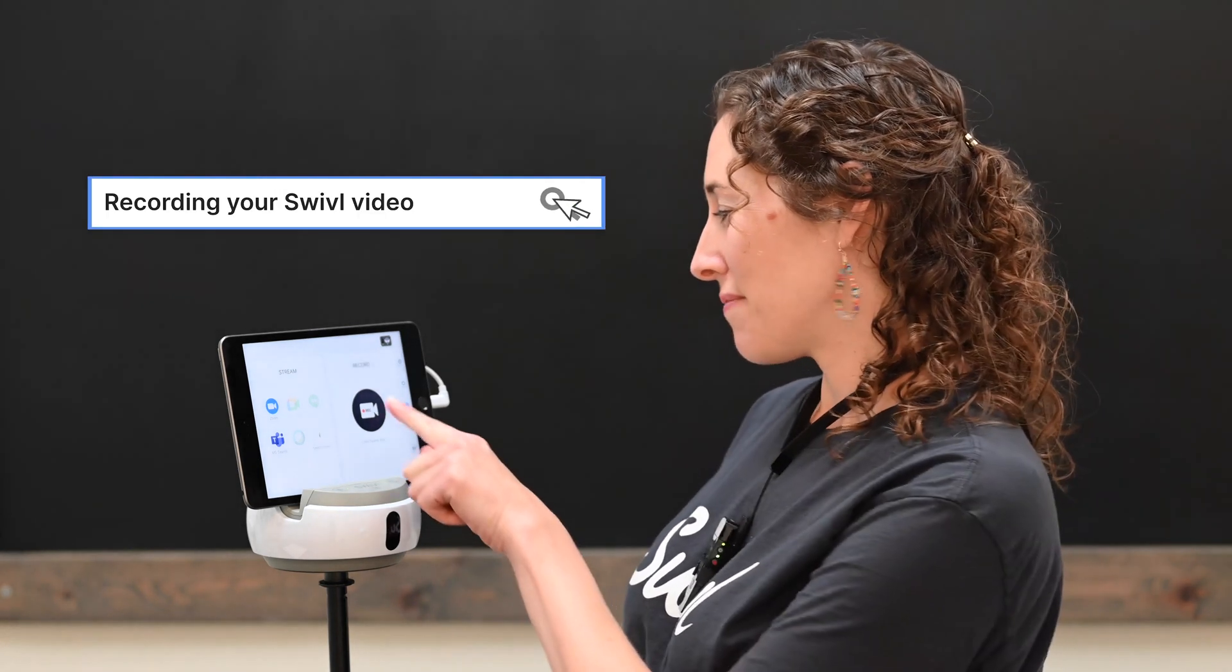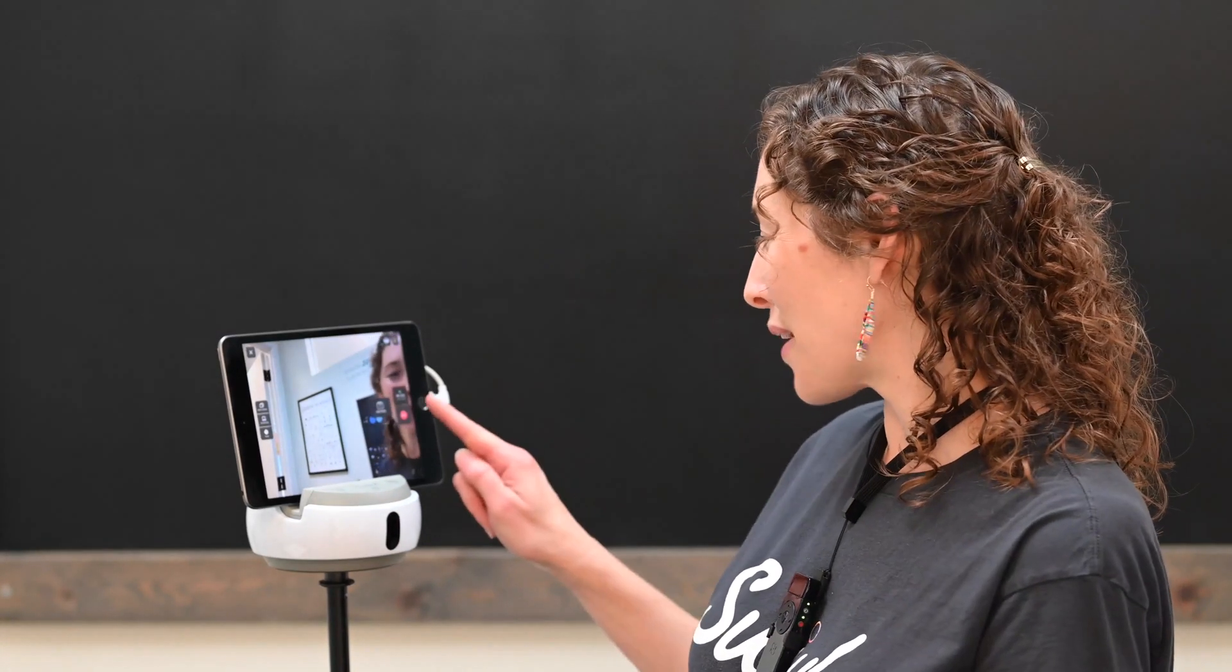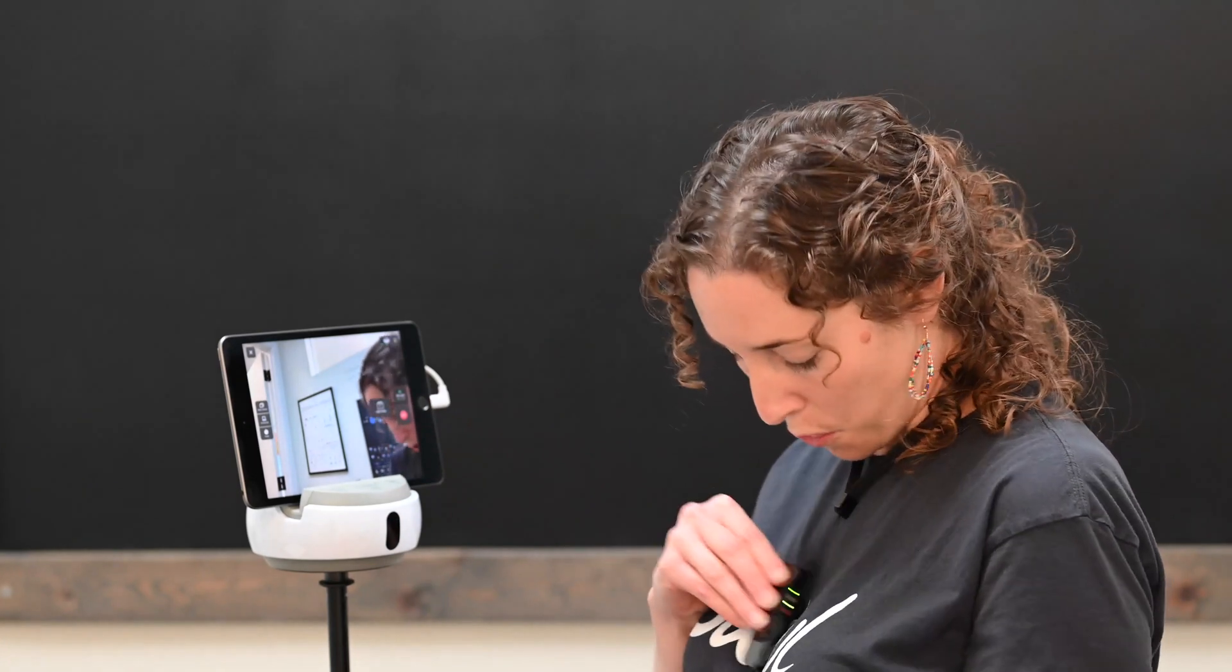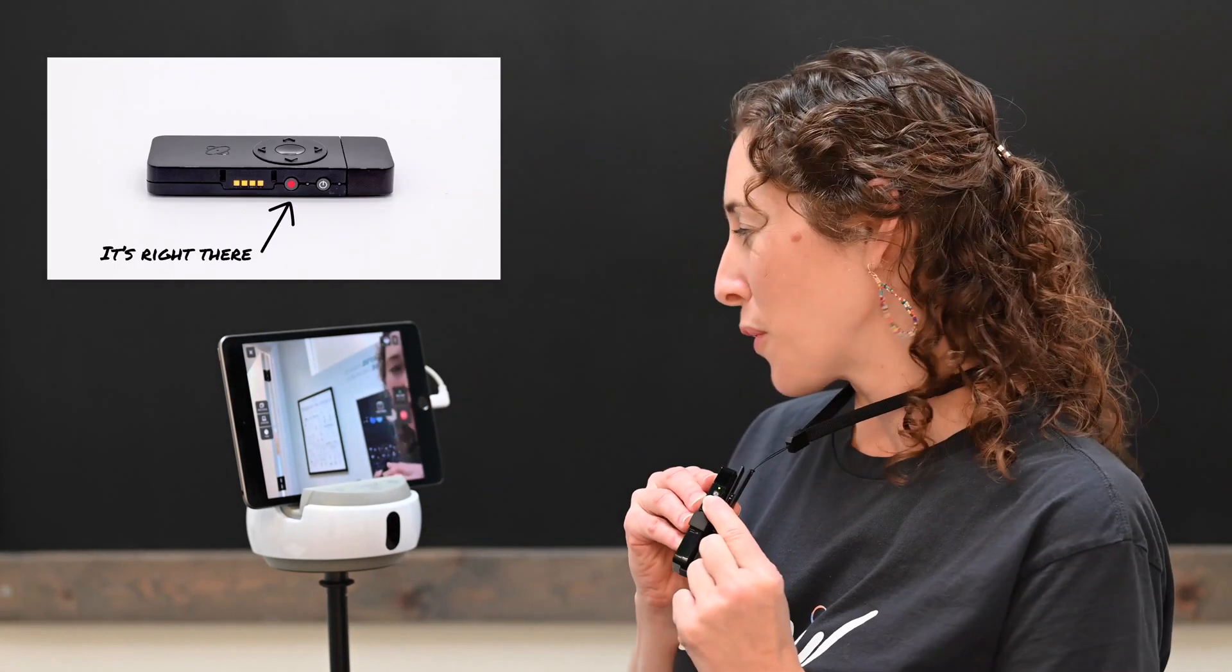Let's talk about recording with your Swivel robot. From the home screen, tap the record icon. This will open the capture screen. To start a recording, I can either press the red record button on the screen or click the red button on the side of my marker. This will start recording.